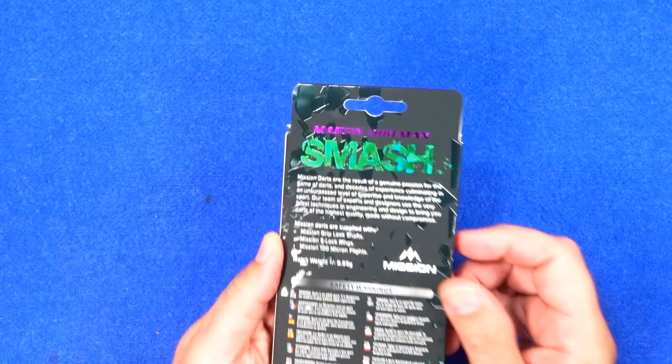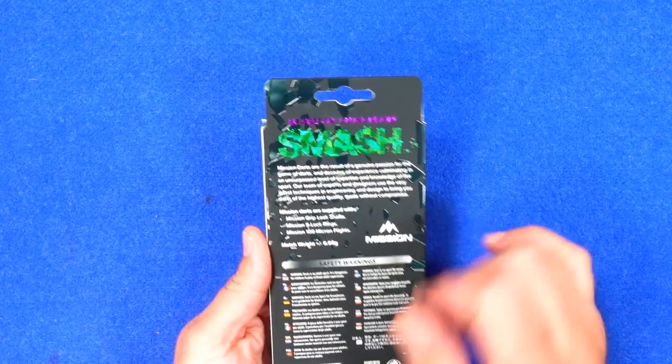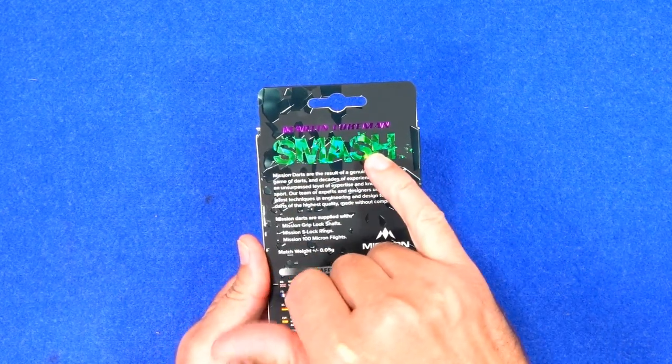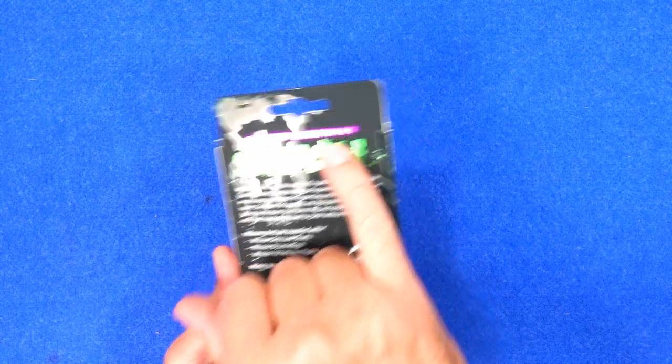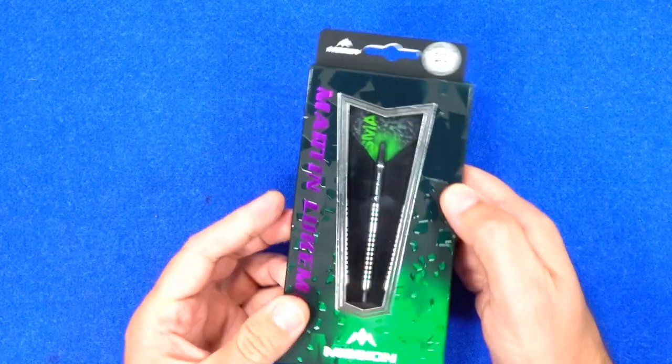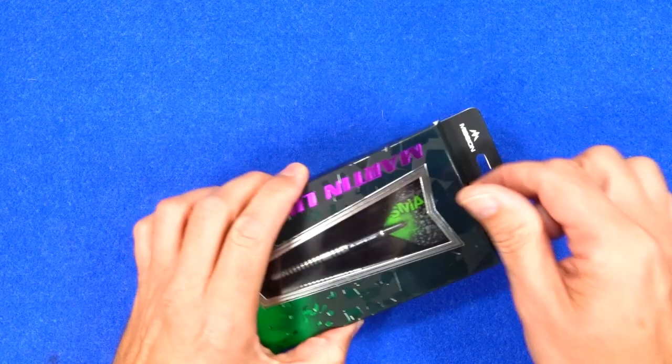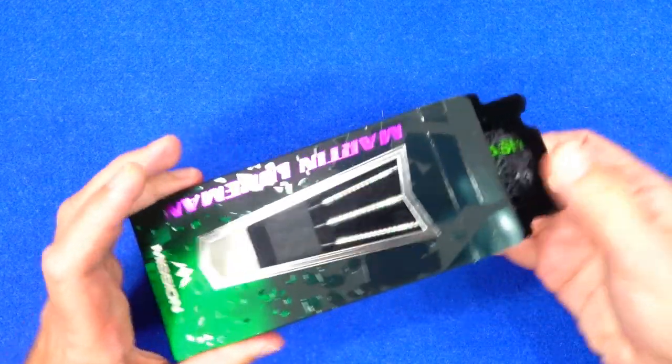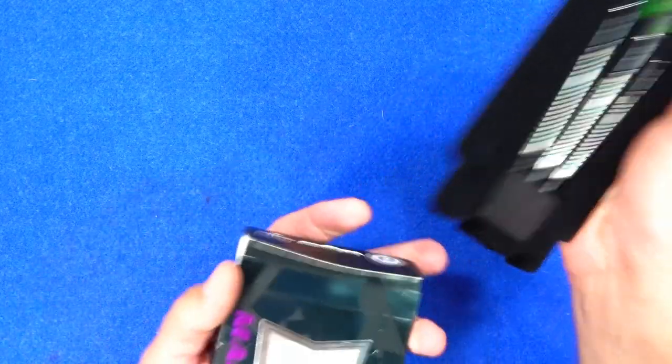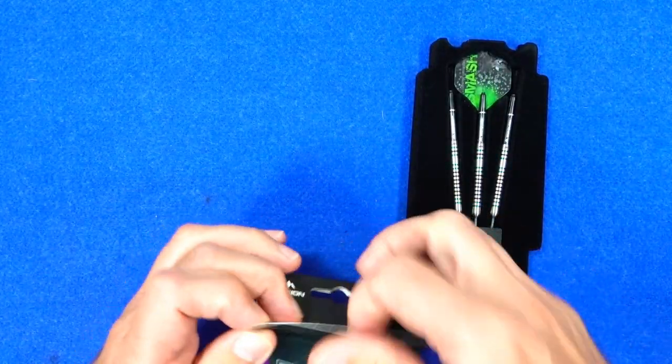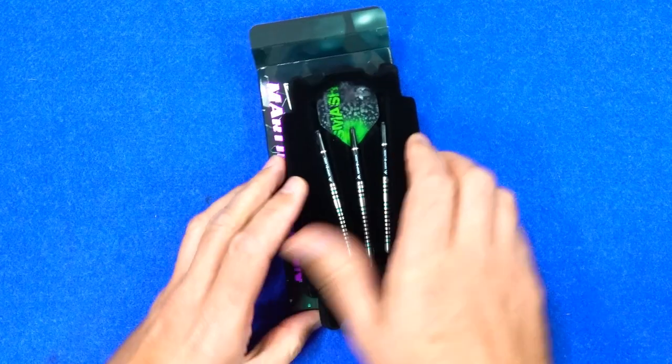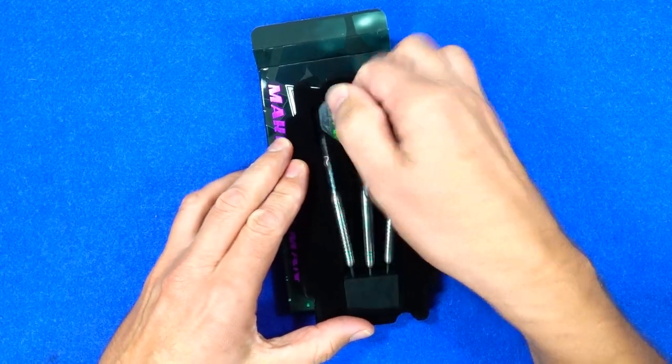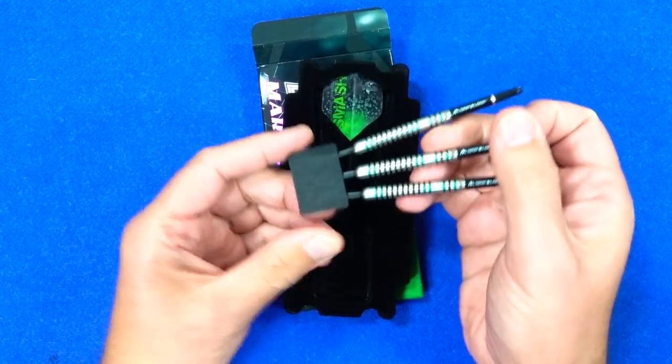The darts come in this slim cardboard packaging like most of the Mission brand. I have to admit I don't really know much about Martin Lukeman, but the nickname is Smash and the writing is in pink and green, so it must be a fan of the Hulk. There's got to be some Hulk theme going on there. It's green, so it's got to be good. We all know green is the best color, right?